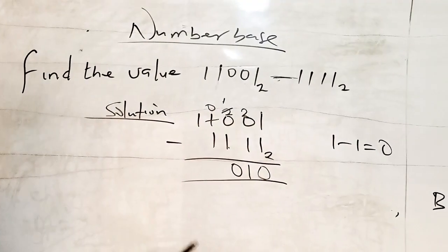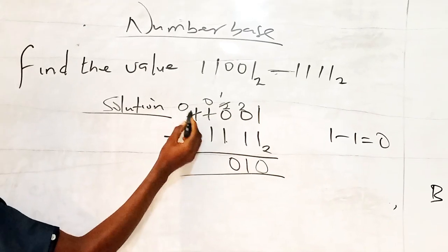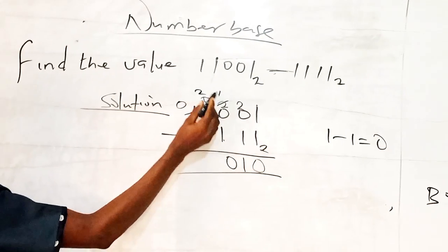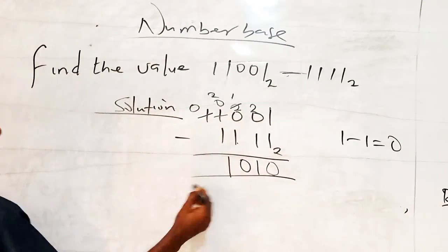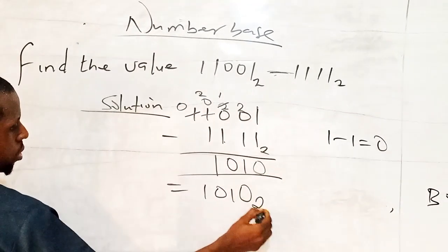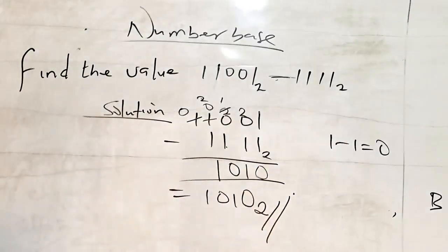0 minus 1 is not possible. You borrow from here. When you borrow it turns to the base, that is 2. So 2 minus 1 is 1. So our answer is 1010 base 2. Thank you.